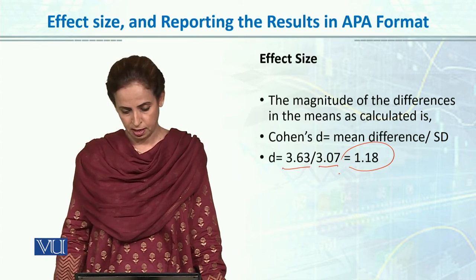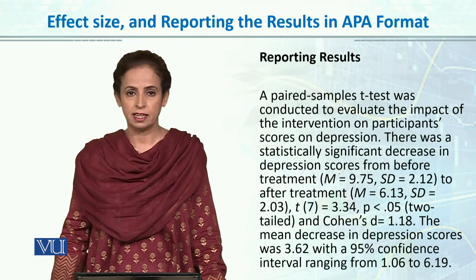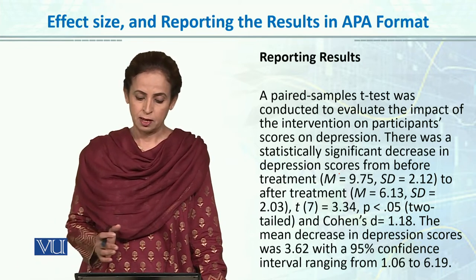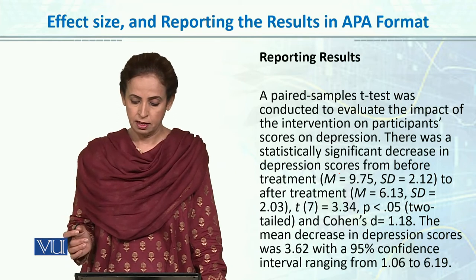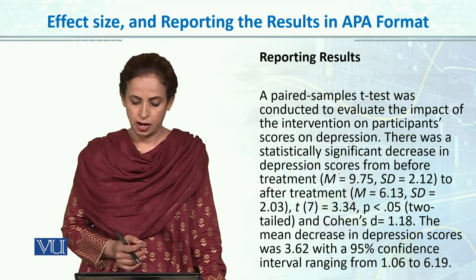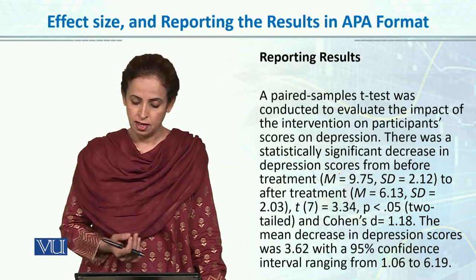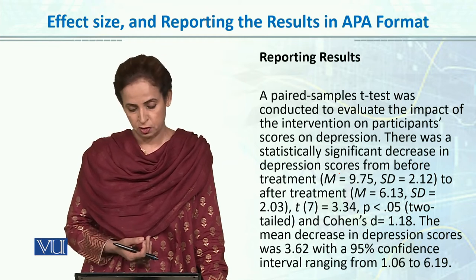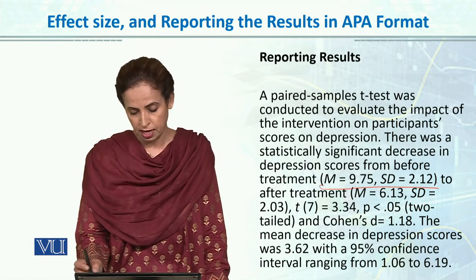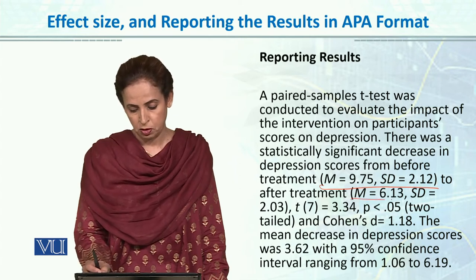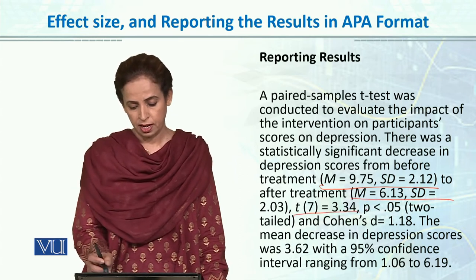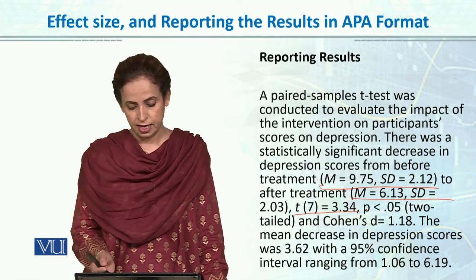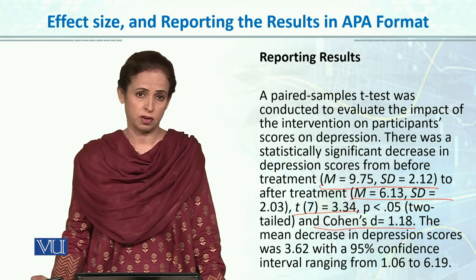For reporting, we will first state one or two lines descriptively: a paired sample t-test was conducted to evaluate the impact of the intervention on participant scores on depression. There was a statistically significant decrease in the depression scores from before treatment — giving its mean and standard deviation — and after treatment, giving its mean and standard deviation. Then we give the t-value, then the p-value (p < 0.05), two-tailed test, and then report the Cohen's D value, which is 1.18.